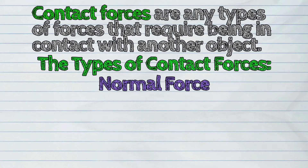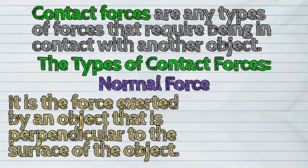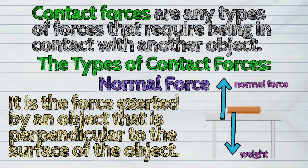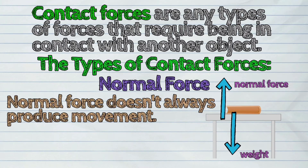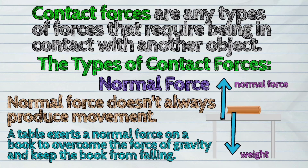Second, the normal force. It is the force exerted by an object that is perpendicular to the surface of the object. Normal force doesn't always produce movement. Like this example: a table exerts a normal force on a book to overcome the force of gravity and keep the book from falling.